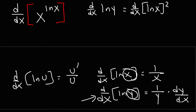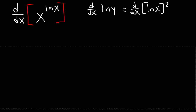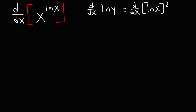So now let's go back to the problem. The derivative of ln y is 1 over y times dy/dx. Now what about the derivative of (ln x)², because it's different than just ln x.